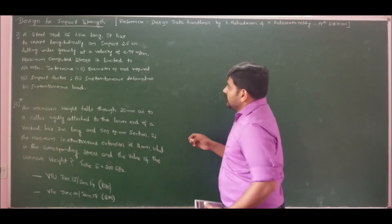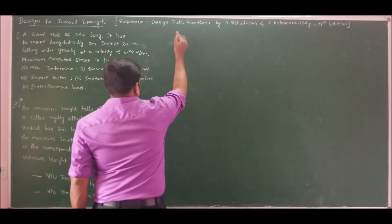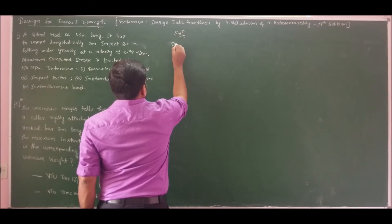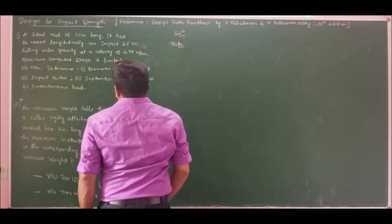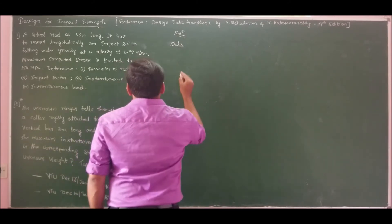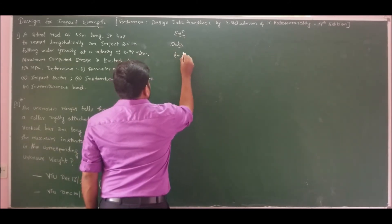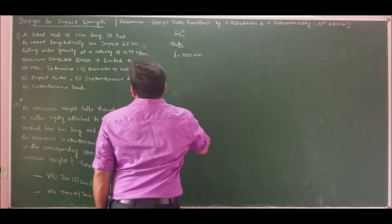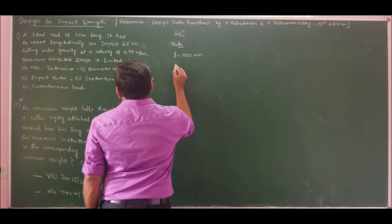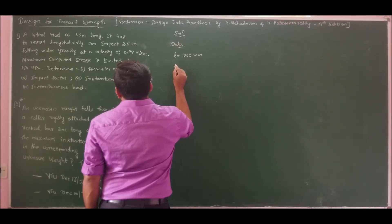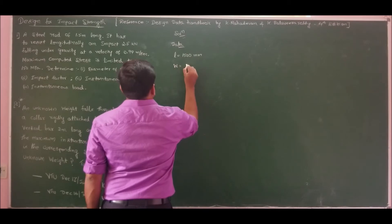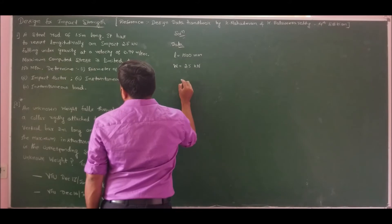Let us note the data first to solve this problem. There is a steel rod of 1.5 meters long, so length L is 1500 mm. It has to resist longitudinally an impact load of 2.5 kN, so the load W is 2.5 kN.